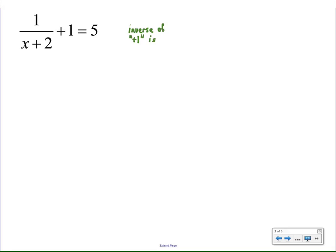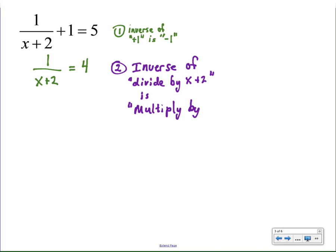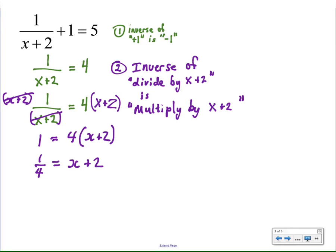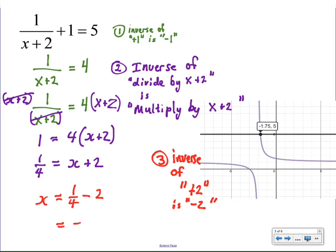Once again, we're going to invert add 1, which is subtract 1 from both sides. Now I'm going to invert divide by (x+2). That's multiply by (x+2) on both sides. On the left-hand side, we'll see we divide out to 1. On the right-hand side, we have 4 times (x+2). Now here I inverted multiply by 4, so I divided both sides by 4 so that I could show the third step, invert add 2, which is subtract 2. And we get x = -1¾, once again consistent with the graph.